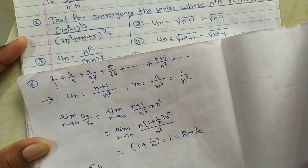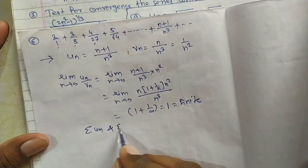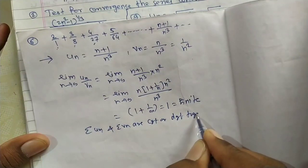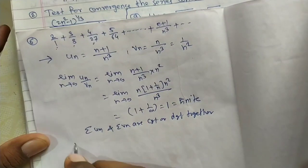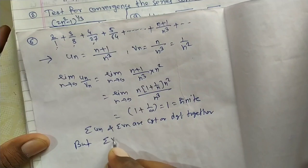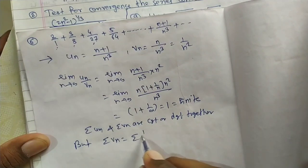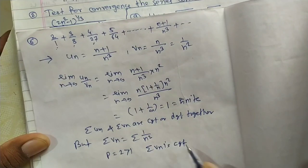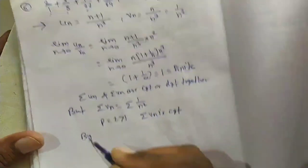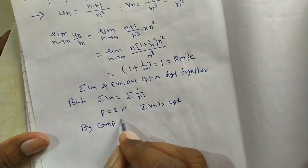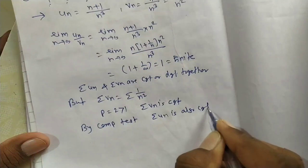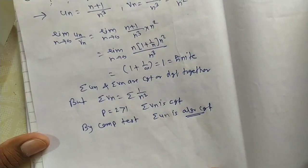Since the limit is finite, series Σun and series Σvn are convergent or divergent together. Series Σvn = Σ(1/n²), and by the p-series test with p=2 > 1, series Σvn is convergent. Hence by the comparison test, series Σun is also convergent.